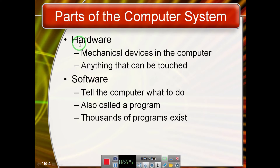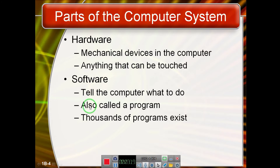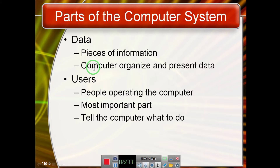By definition, hardware is a physical or mechanical device that can be touched. It could be a mechanical device, an electronic device, an electromechanical device, an optical device, or a magnetic device. Software, which holds instructions, is also called a program. It drives the hardware and tells the computer what to do. Thousands of software programs are available.